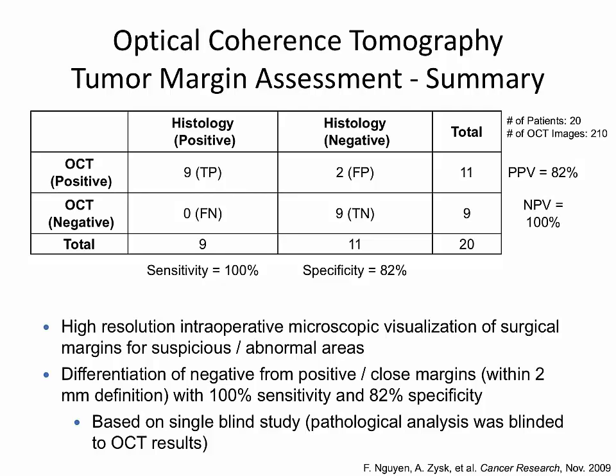Over these 20 patients, we achieved 100% sensitivity and 82% specificity in differentiating between a negative margin and lumped positive and close margins together, meaning we can see cancer within that 2 millimeter margin. This is both the distance pathologists use to determine a positive or close margin, and it happens to fit nicely with OCT's penetration depth of about 2 to 3 millimeters.